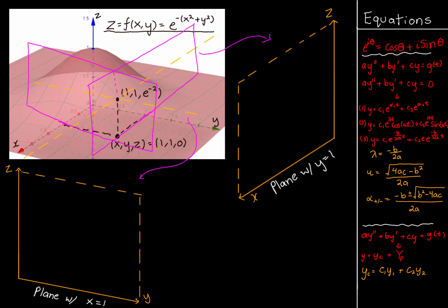We're imagining these planes slicing into the surface itself, because when planes intersect surfaces they create a curve of intersection. In R2, two lines intersecting produce a point; but when a 2D plane intersects a 3D surface, you get an actual curve of intersection. This is what the curves of intersection look like in this case — on the xz plane the curvature looks like this, and on the yz plane it looks similar.